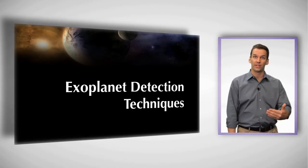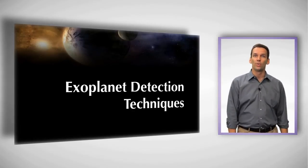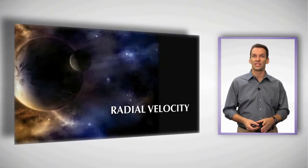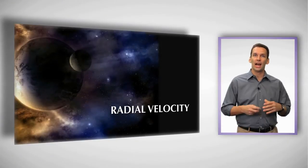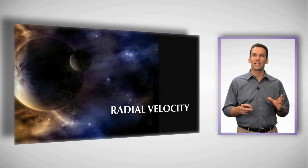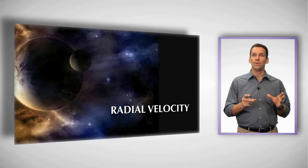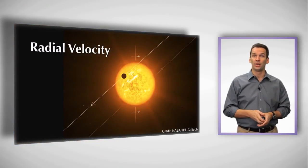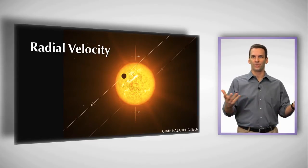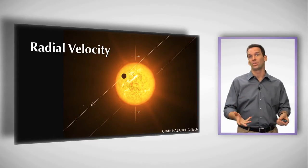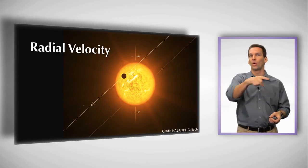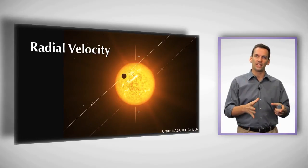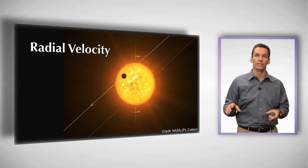This planet found around 51 Pegasi was found using the radial velocity or the wobble technique. And how that technique works is it looks for the motion of the star as the planet orbits about the star. So we tend to think, if we confine ourselves to our solar system, say Jupiter going around the Sun, we tend to think of the Sun being stationary and Jupiter just orbits around it.